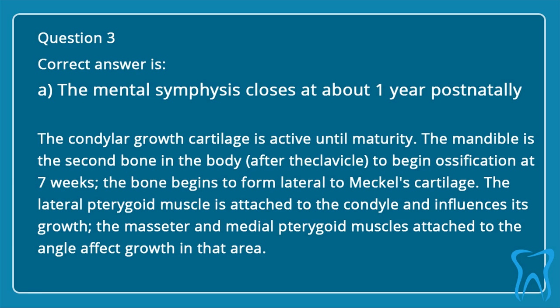The condylar growth cartilage is active until maturity. The mandible is the second bone in the body, after the clavicle, to begin ossification at 7 weeks; the bone begins to form lateral to Meckel's cartilage. The lateral pterygoid muscle is attached to the condyle and influences its growth, while the masseter and medial pterygoid muscles attached to the angle affect growth in that area.